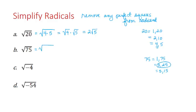So I'll rewrite that as 25 times 3, which is the square root of 25 times the square root of 3, or 5 times the square root of 3.